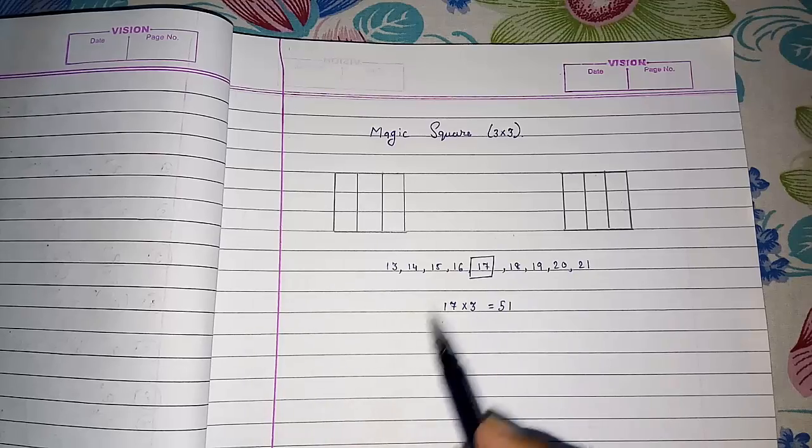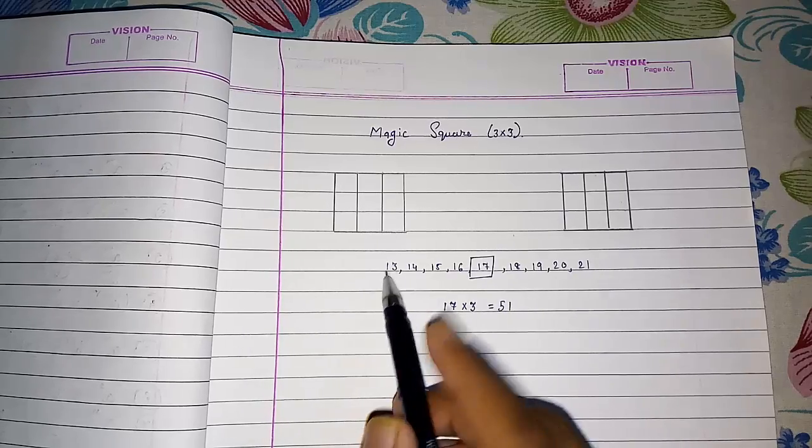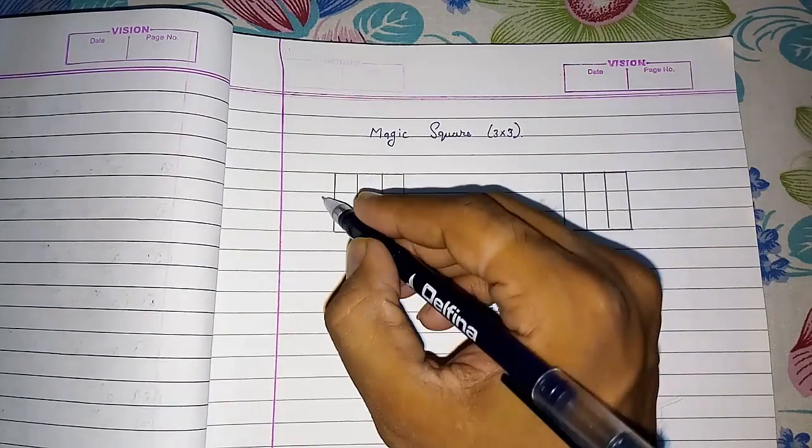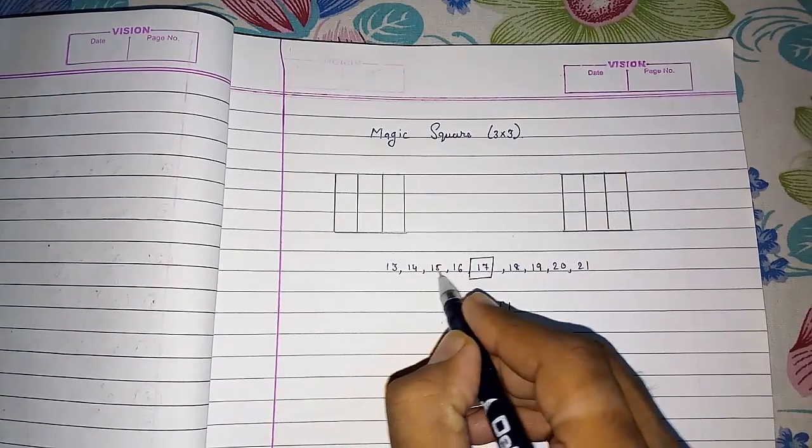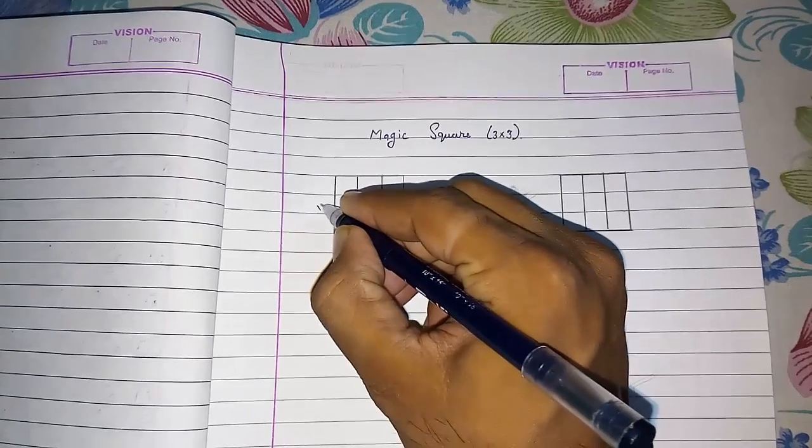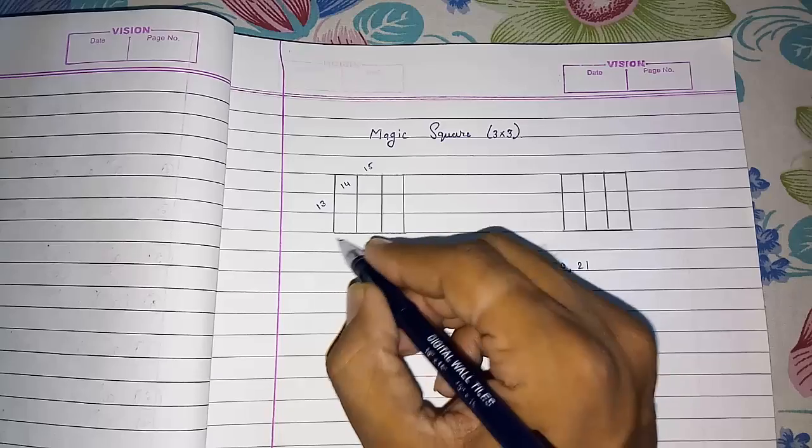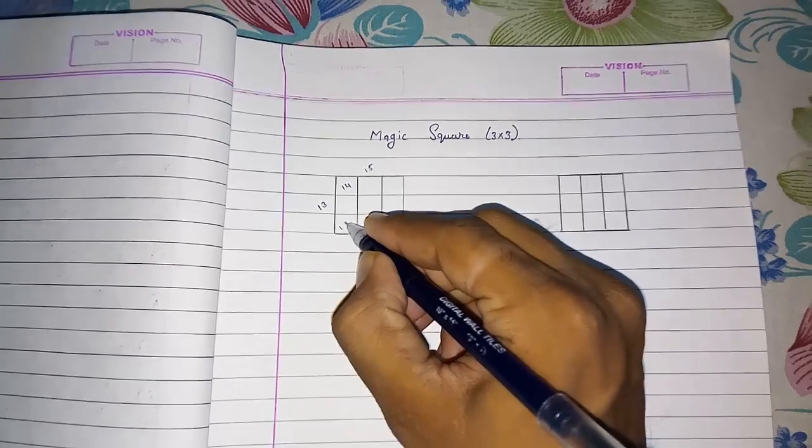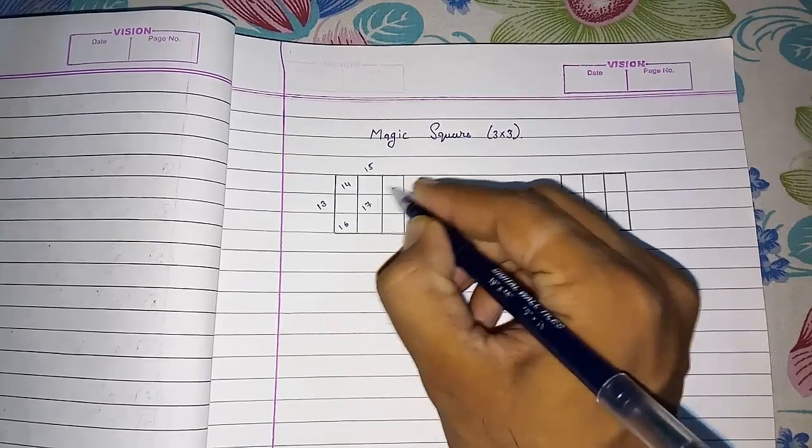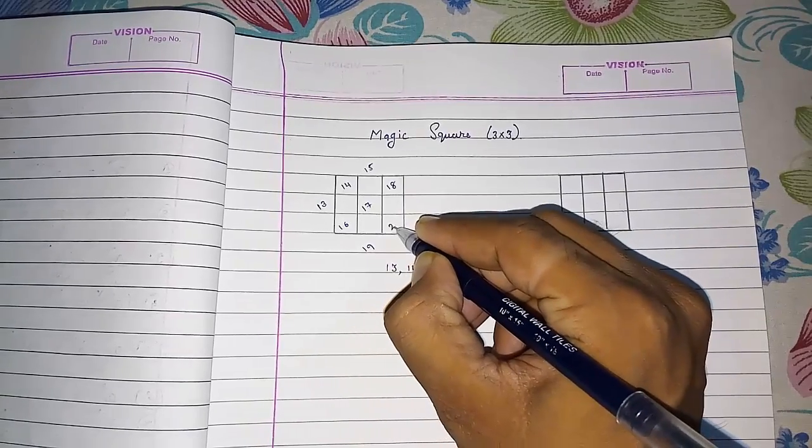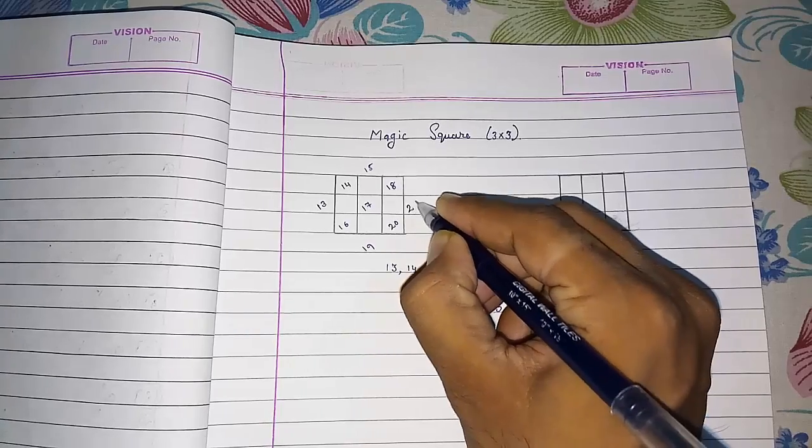Now we are starting. What to do and how to do it? We have to write these 3 numbers diagonally. Look, I am writing here: 13, 14, 15. You can see. Then 16, 17, 18. Then 19, 20, and 21.